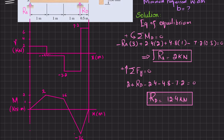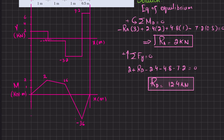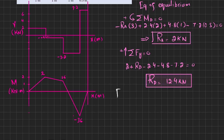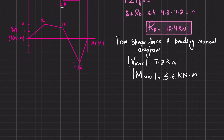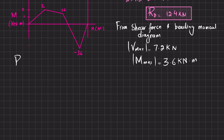From the shear force and bending moment diagrams, the maximum shear force magnitude is 7.2 kN and the maximum bending moment magnitude is 3.6 kN·m.